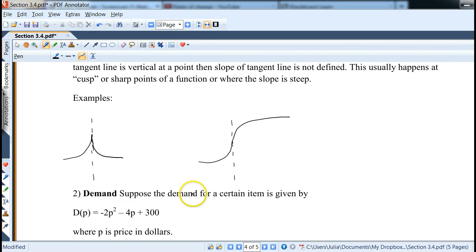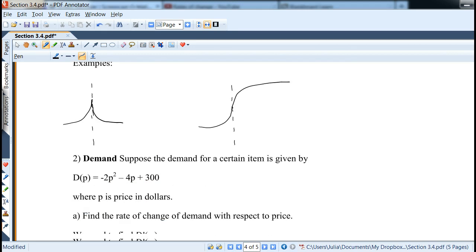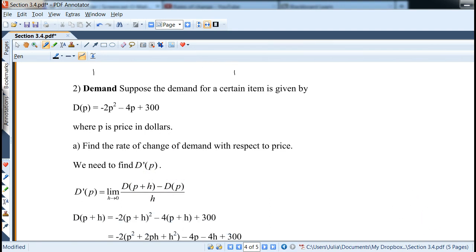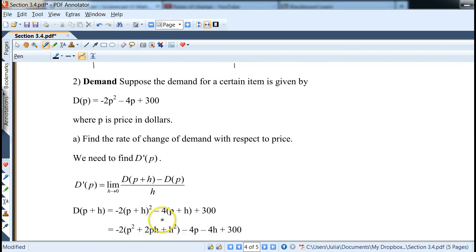And the last example we'll look is the business application with the demand. What if it's given in terms of p, and p is in dollars. The idea is exactly the same to find the derivative, except we have p instead of x. Notice how we defined it. And again, we try to keep variables consistent. So again, I simply plug in p plus h into the function, and you distribute it, it all works out exactly the same, and you get six terms at the end.